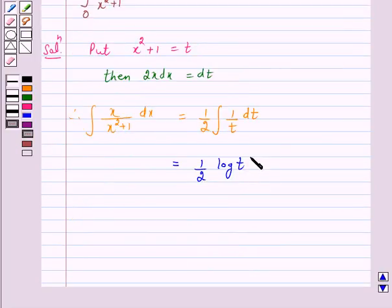Here, we will not mention the constant of integration. Now, we will resubstitute for the new variable. That is, now again, we will substitute t is equal to x square plus 1. So, this is equal to 1 by 2 log of x square plus 1.